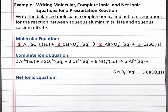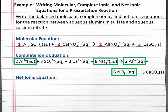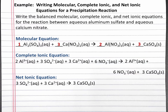For our net ionic equation, we have to eliminate spectator ions. Spectator ions show up on both sides of the equation in the complete ionic equation. There are 2 aluminum 3+ ions on both sides, and there are 6 nitrate ions on both sides, so we can eliminate these ions. What is left is our net ionic equation: 3 sulfate plus 3 calcium 2+ produces 3 calcium sulfate solid. So these are our molecular, complete ionic, and net ionic equations.